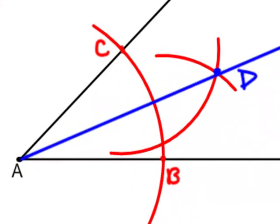And there you have it. You have ray AD is the angle bisector of angle CAB.